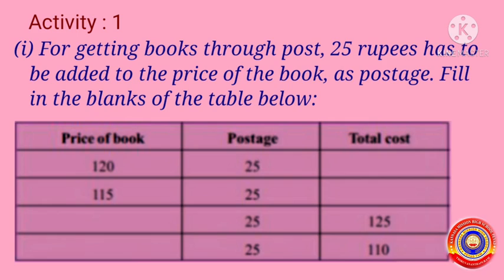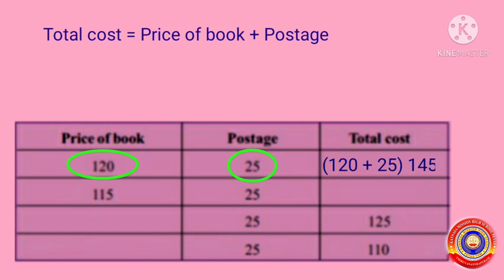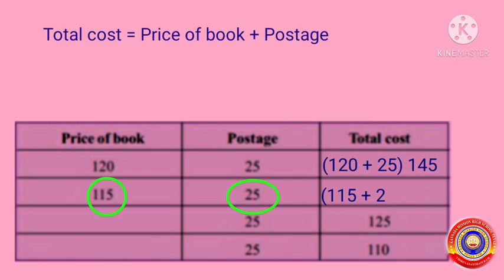How will you find out the total cost of books? The total cost is equal to price of book plus postage. In the first question, the price of book is equal to 120 and the postage is equal to 25, then the total cost is equal to 120 plus 25, that is equal to 145. In the second question, the price of book is 115 and the postage is 25, then the total cost is equal to 115 plus 25, that is equal to 140.